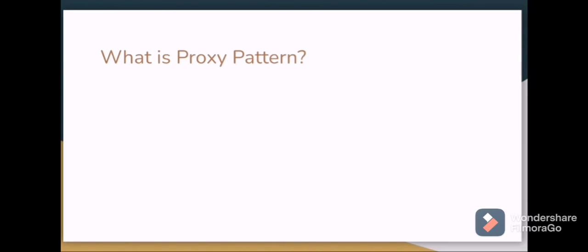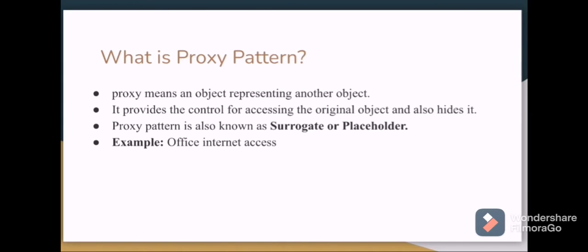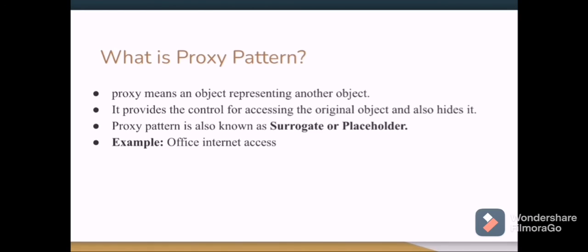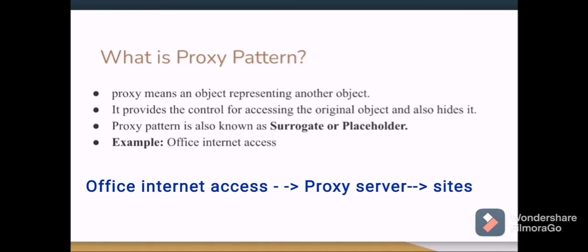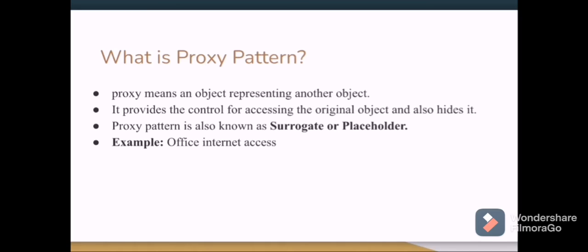What is the proxy pattern? In general, proxy means that instead of one object, another object is used. A proxy is an object representing another object. This pattern provides control for accessing the original object and hides that original object. The proxy pattern is also known as surrogate or placeholder. An example is office or college internet access — when you try to access a site that is not permitted, it gets blocked. This happens through a proxy server that first checks whether the site is allowed, and if not, blocks it.